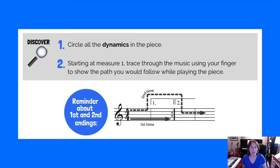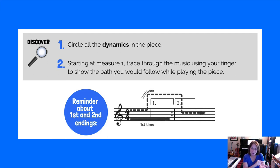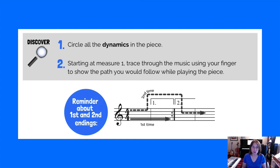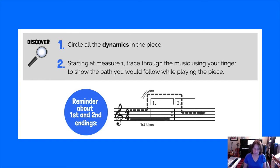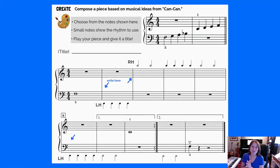In the Discover section, we ask the student to circle all the dynamics, then starting at measure one, have the student trace through the music using their finger to show the path they would follow while playing. This is especially valuable at the early elementary level for learning first and second endings. I've tried to show with a dashed line that the second time through you're skipping over to the second ending. Having the student actually move their finger is a great tool to ensure they really understand how the endings work.